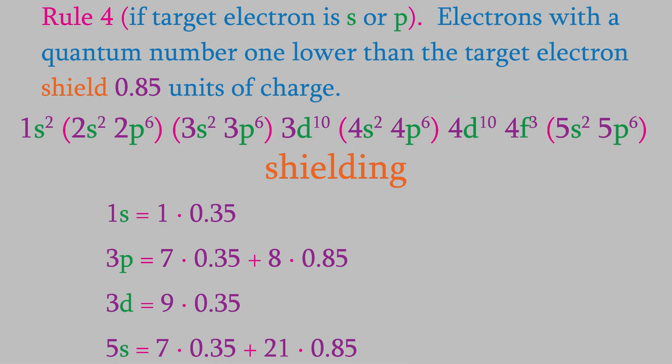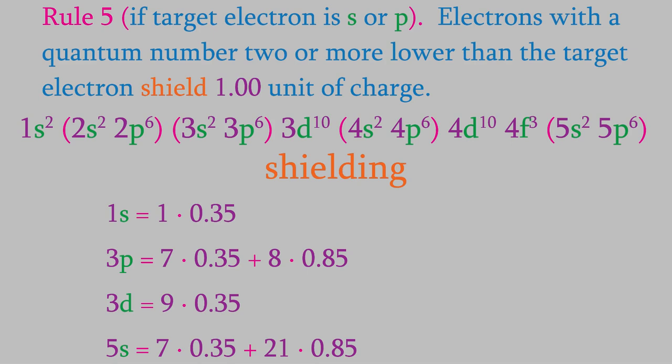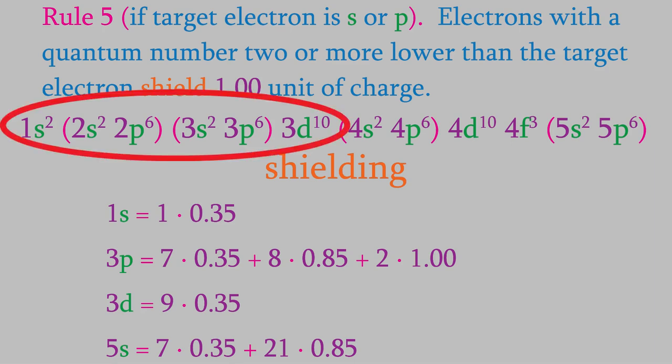The next of Slater's rules also only applies when our target electron is in an s or p orbital. It says that every electron with a principal quantum number two or more lower than the target electron shields one whole unit of charge. There are no electrons with quantum numbers lower than one, so this rule has no effect on the 1s electron. There are two electrons with a quantum number two or more below the 3p electron, shielding a total of 2 units of charge. There are 28 electrons with a principal quantum number two or more below that of a 5s electron, shielding a total of 28 units of charge.